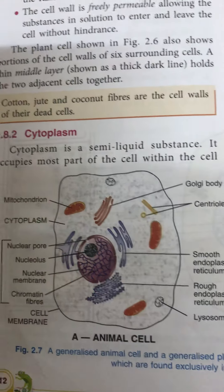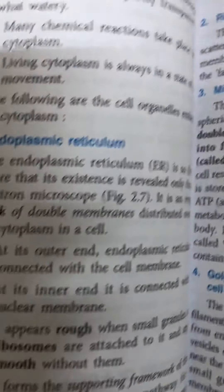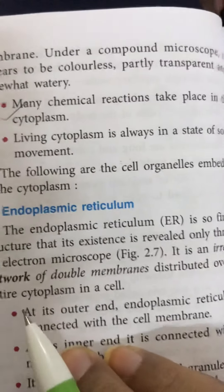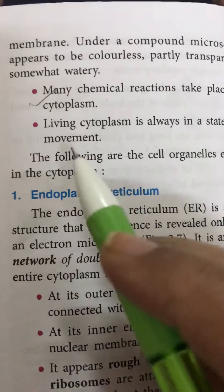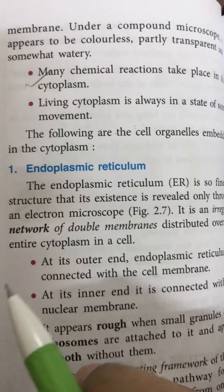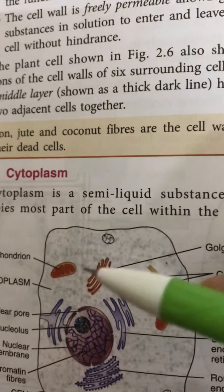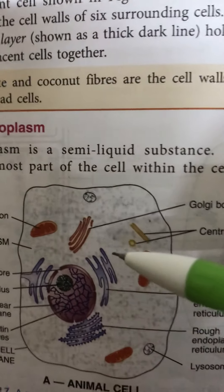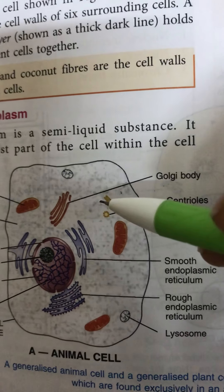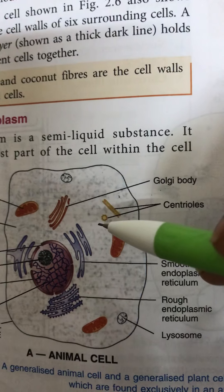Cytoplasm is a semi-liquid substance filling the space between the nuclear membrane and the cell membrane. It is the site where all chemical reactions take place. Many chemical reactions take place in the cytoplasm, and the cytoplasm is always in a state of movement. It contains various organelles which perform specific functions of the cell.